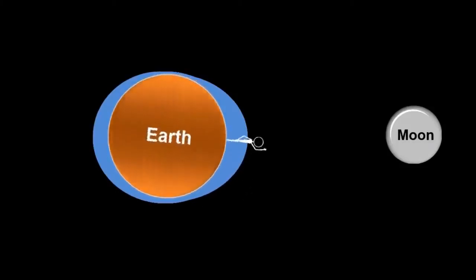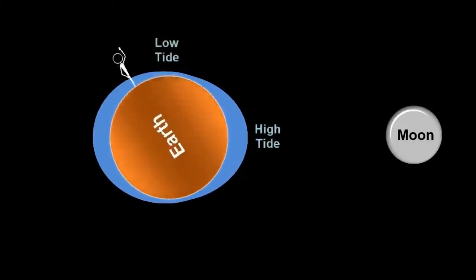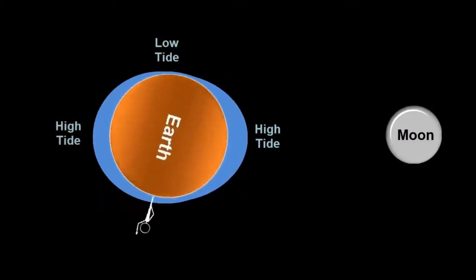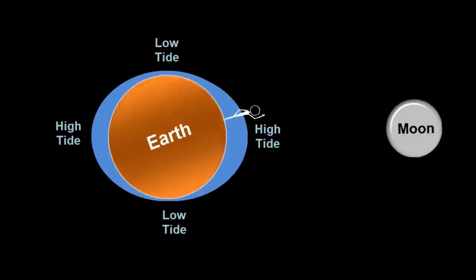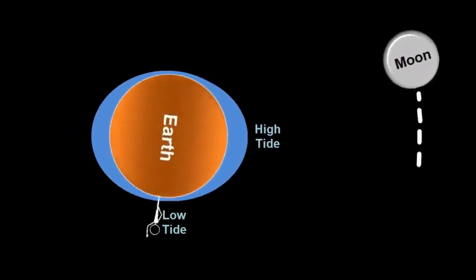The current rate of tidal deceleration is anomalously high, implying Earth's rotational velocity must have decreased more slowly in the past. Empirical data tentatively shows a sharp increase in rotational deceleration about 600 million years ago.